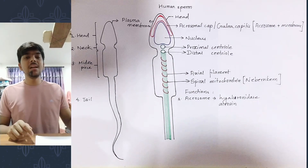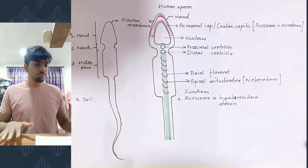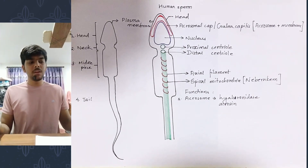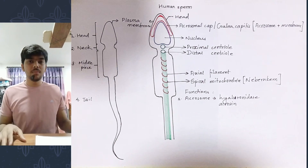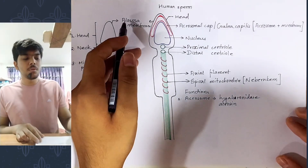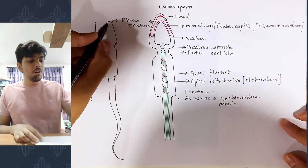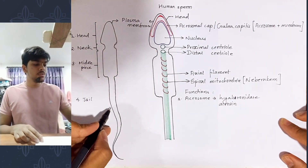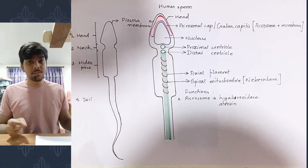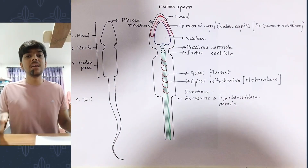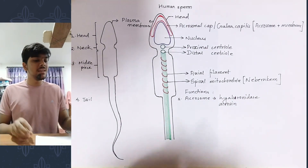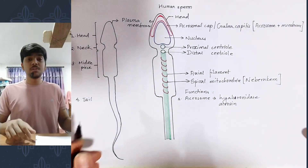Now let's look at all these individual parts of the sperm one by one in more detail. Human sperm is, after all, a cell — more specifically, it's an animal cell, and the outermost covering of any animal cell is the plasma membrane. So the outermost covering of the human sperm is also plasma membrane. This black color line used to form the diagram of the sperm represents the plasma membrane. Inside the plasma membrane is the cytoplasm, and on this cytoplasm you can find the organelles present within the human sperm.